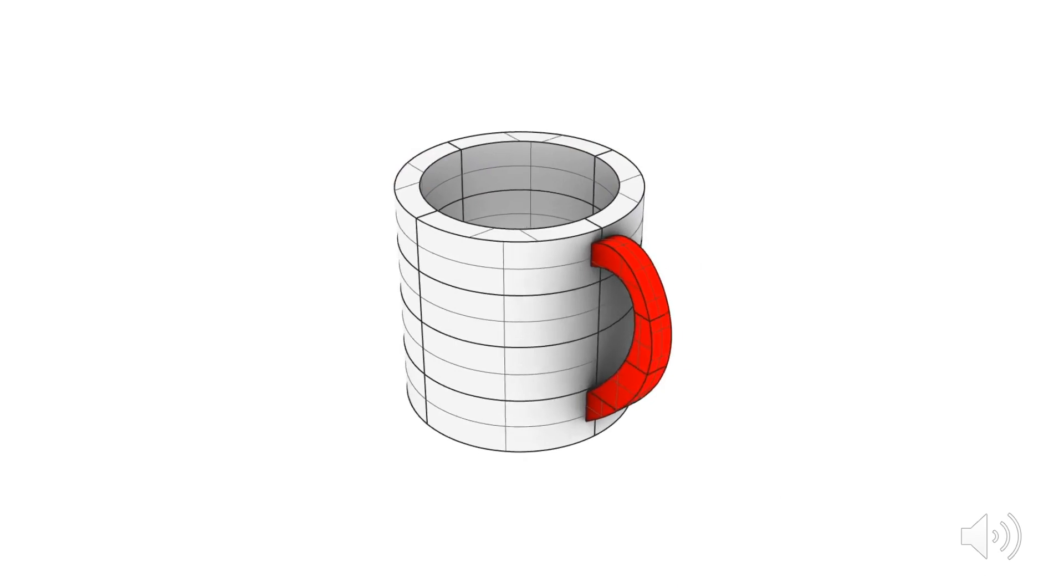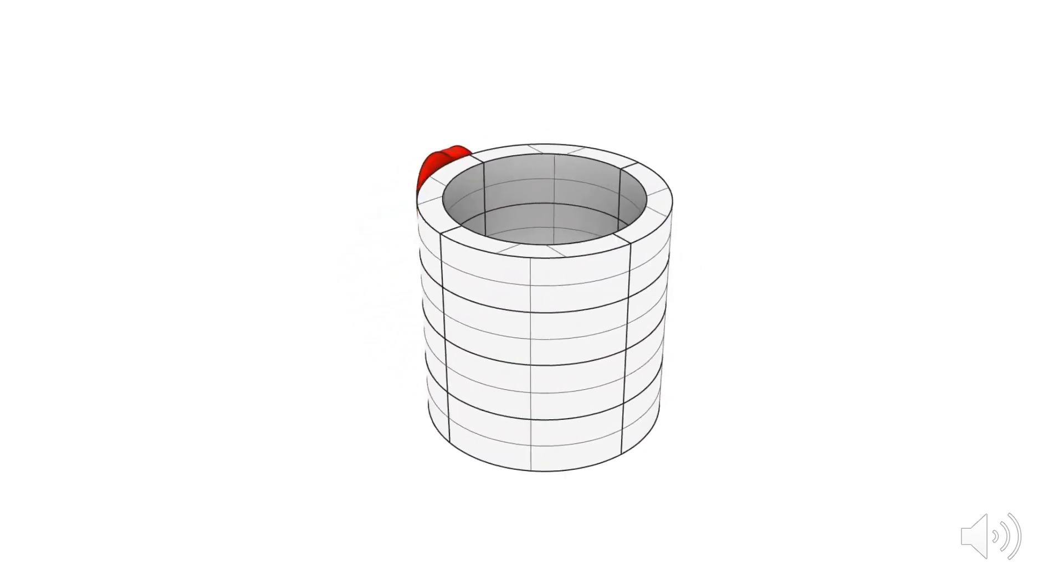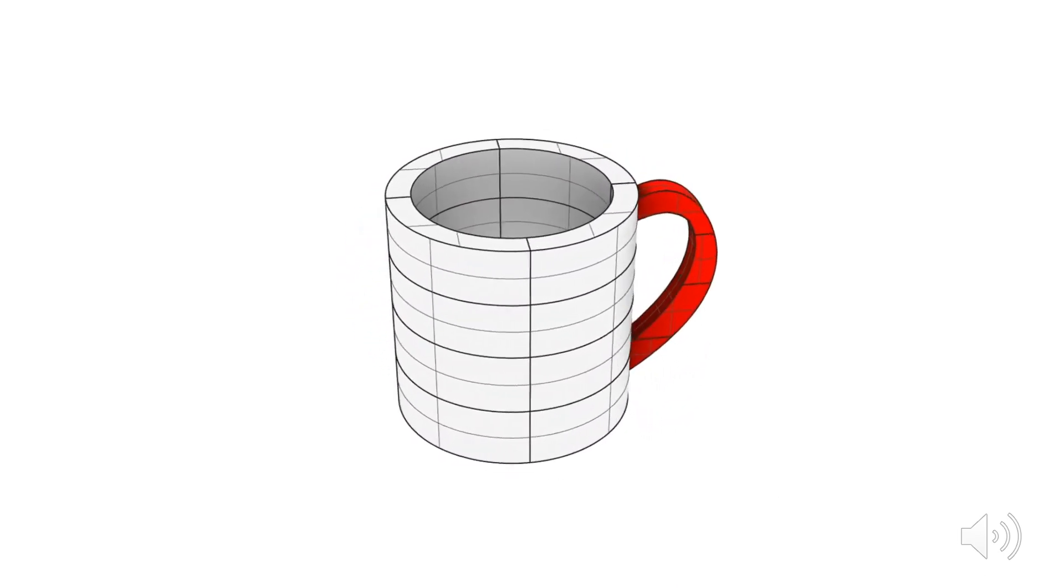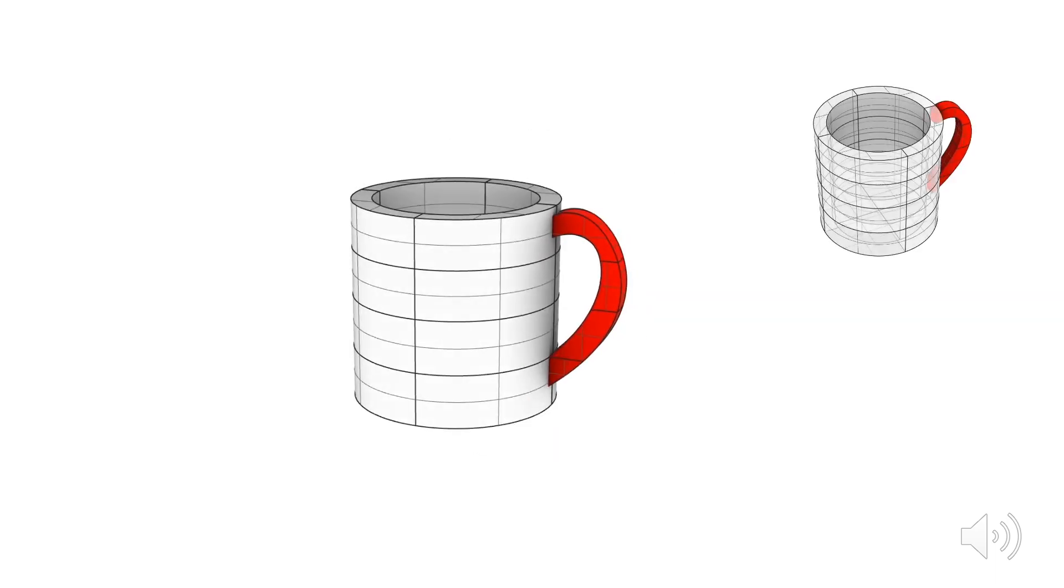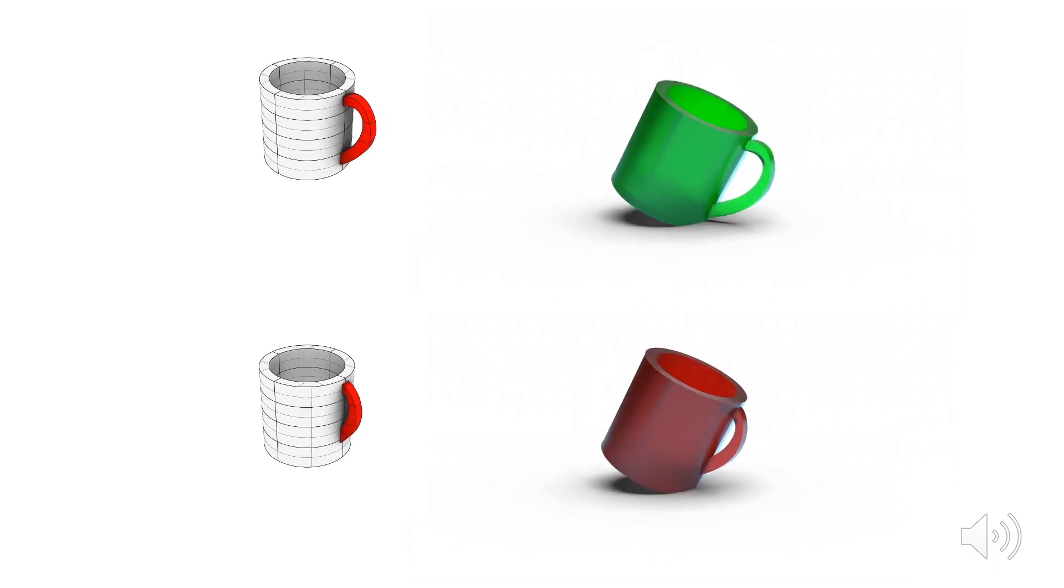Our method is robust to large overlaps in modeling input. The handle of this coffee mug has been carelessly attached by jamming it into the coffee cup body. We see that even in this case, our method can produce plausible physics-based animations.